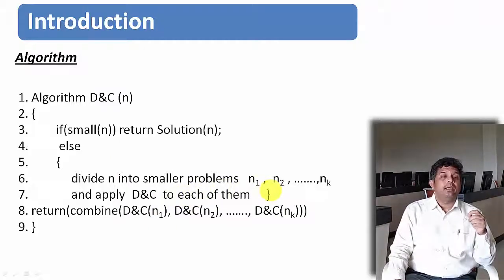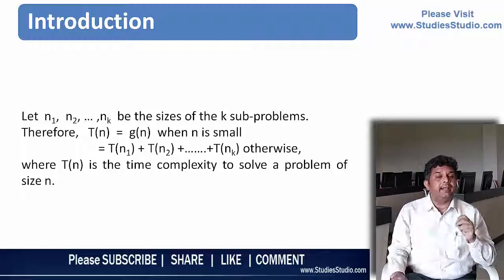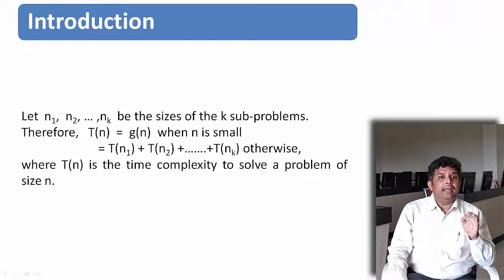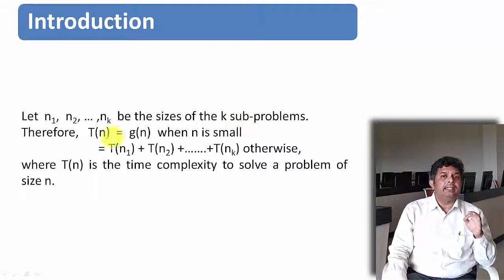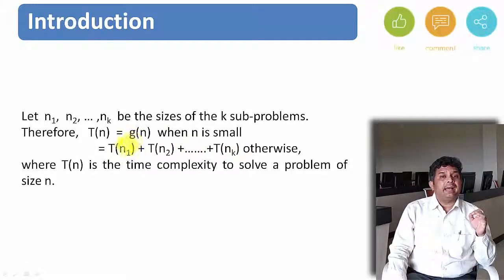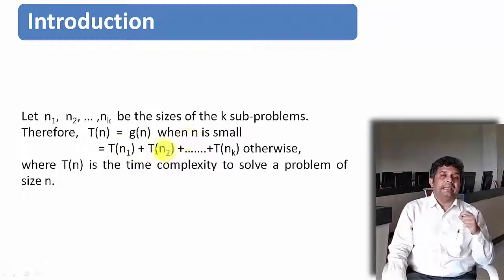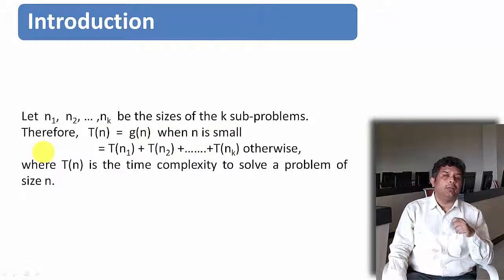Let us see how to find the complexity of any divide and conquer problem. Let n1, n2, nk be the sizes of k sub-problems. If n is small enough, then g(n) can be its complexity. Otherwise, I find the complexity of n1 plus n2 plus nk. When adding time complexities it is nothing but the maximum of T(n1), T(n2), T(nk).